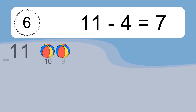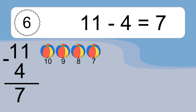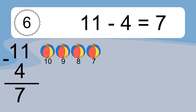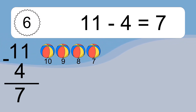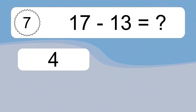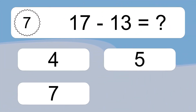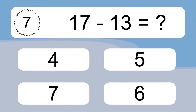11 minus 4 equals what? 11 minus 4 equals 7. Let's count it: 10, 9, 8, 7.